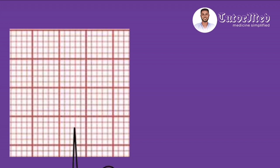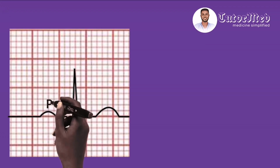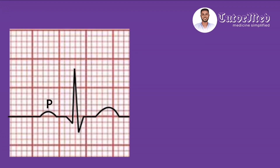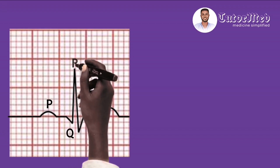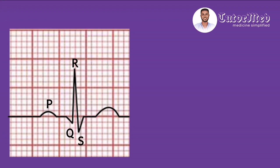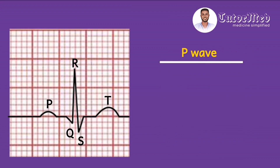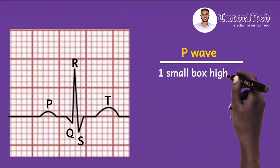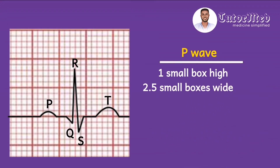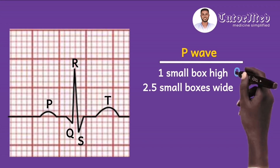Let's assume this is the ECG tracing of a patient's heart. This is the P wave, which represents atrial depolarization — we will visit this later on the channel. We have the QRS complex for ventricular depolarization, and then the T wave for ventricular repolarization. Using the P wave as an example, it is just one small box high and 2.5 small boxes wide — in other words, one millimeter high and 2.5 millimeters wide.